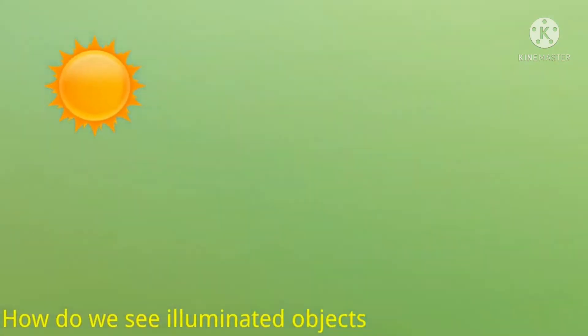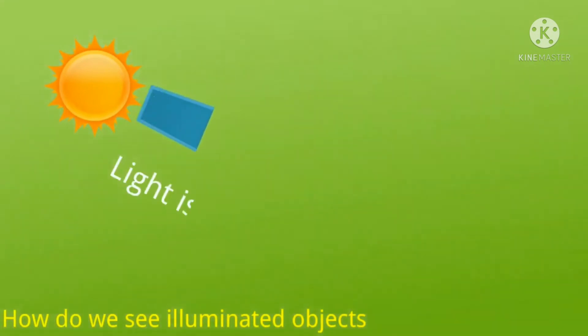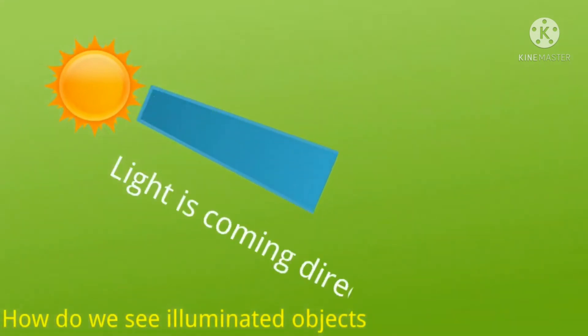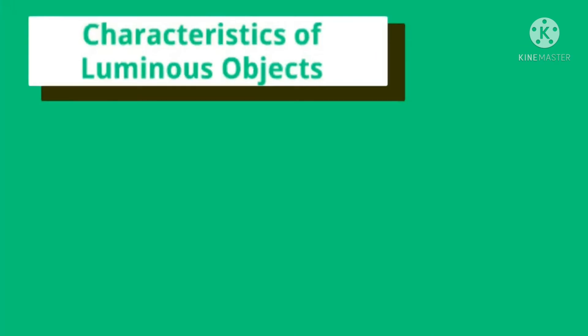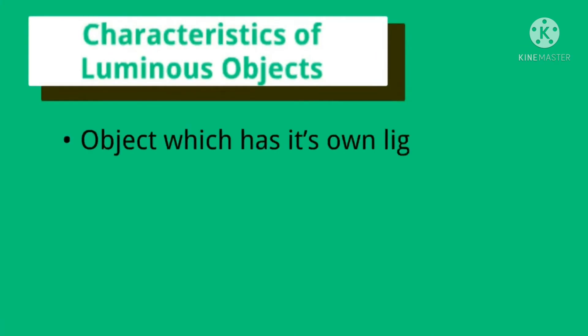Now how do we see luminous objects? Very simple — light comes from luminous objects to our eyes directly, so we can see them. But don't look directly at the sun — you can get hurt. And in the same way with a bulb: light comes from the bulb directly when we see it. And torchlight — everything works the same way. These are all examples of luminous objects.